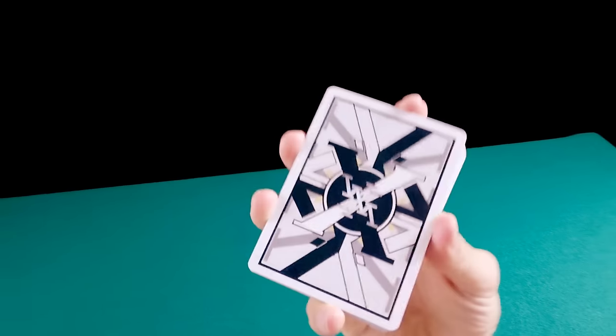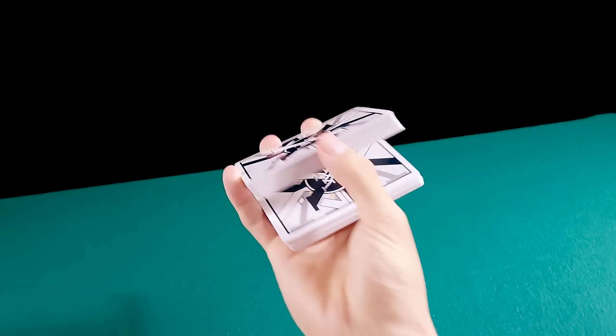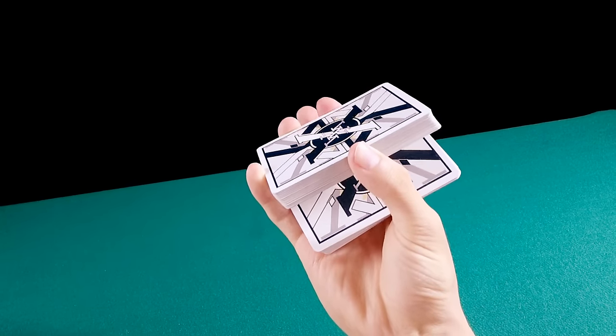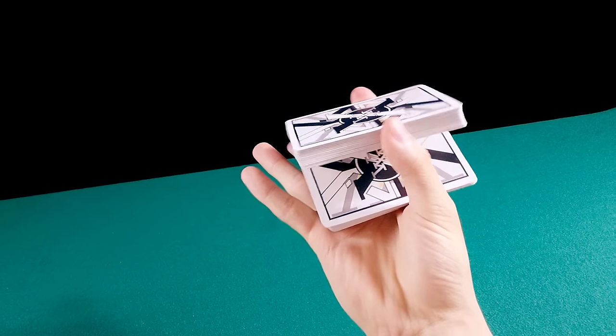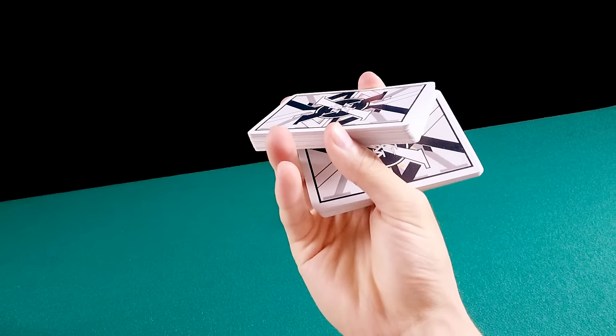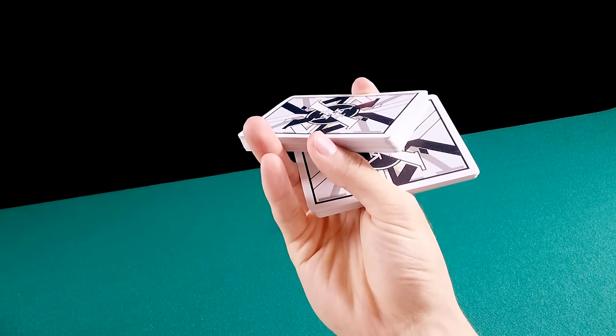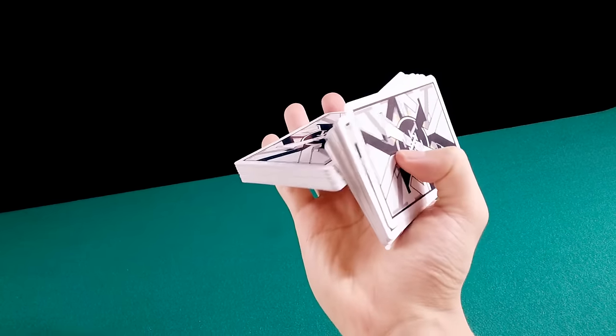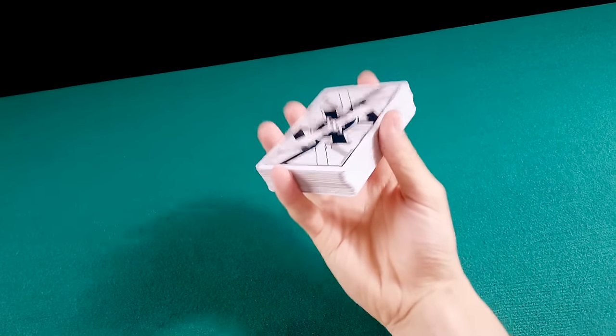Você vai começar o Stratus Grip. Cortar. O dedo indicador vai ficar no lugar do dedo médio. O dedo médio sai. Esses três dedos afastam. Você gira. Coloca o dedo anular aqui no lugar do polegar. Polegar sai. Continua o giro. E fecha. Este é o Revolution Cut.